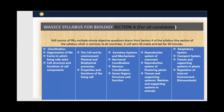Let me walk you through the syllabus quickly. Section A includes topics like classification, organization of life, forms in which living cells exist, cell structure and function, cell and its environment, properties and function of living cells, excretory system, nervous coordination, hormonal coordination, sense organs, and reproduction in both plants and animals.